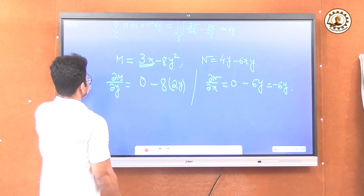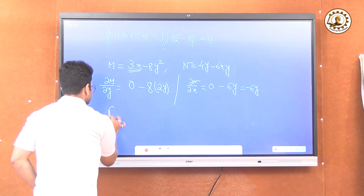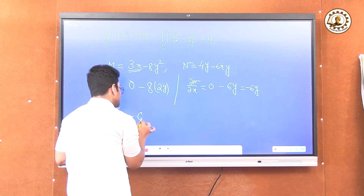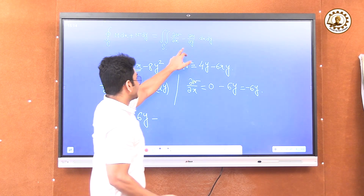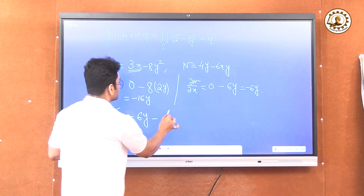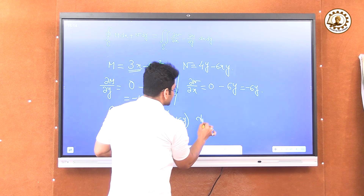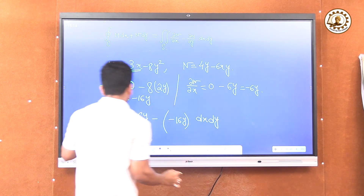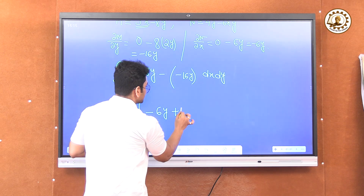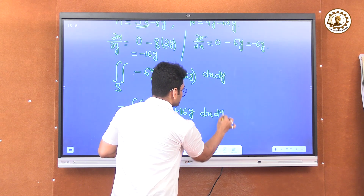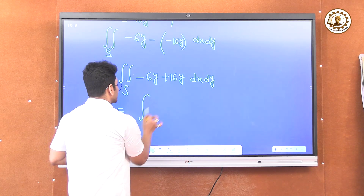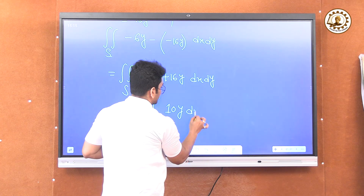According to Green's theorem, this line integral is converted into the double integral over S of (del N / del x minus del M / del y) dx dy. That is: del N / del x is minus 6y, and del M / del y is minus 16y. So we get the double integral of (minus 6y plus 16y) dx dy, which simplifies to the double integral of 10y dx dy.